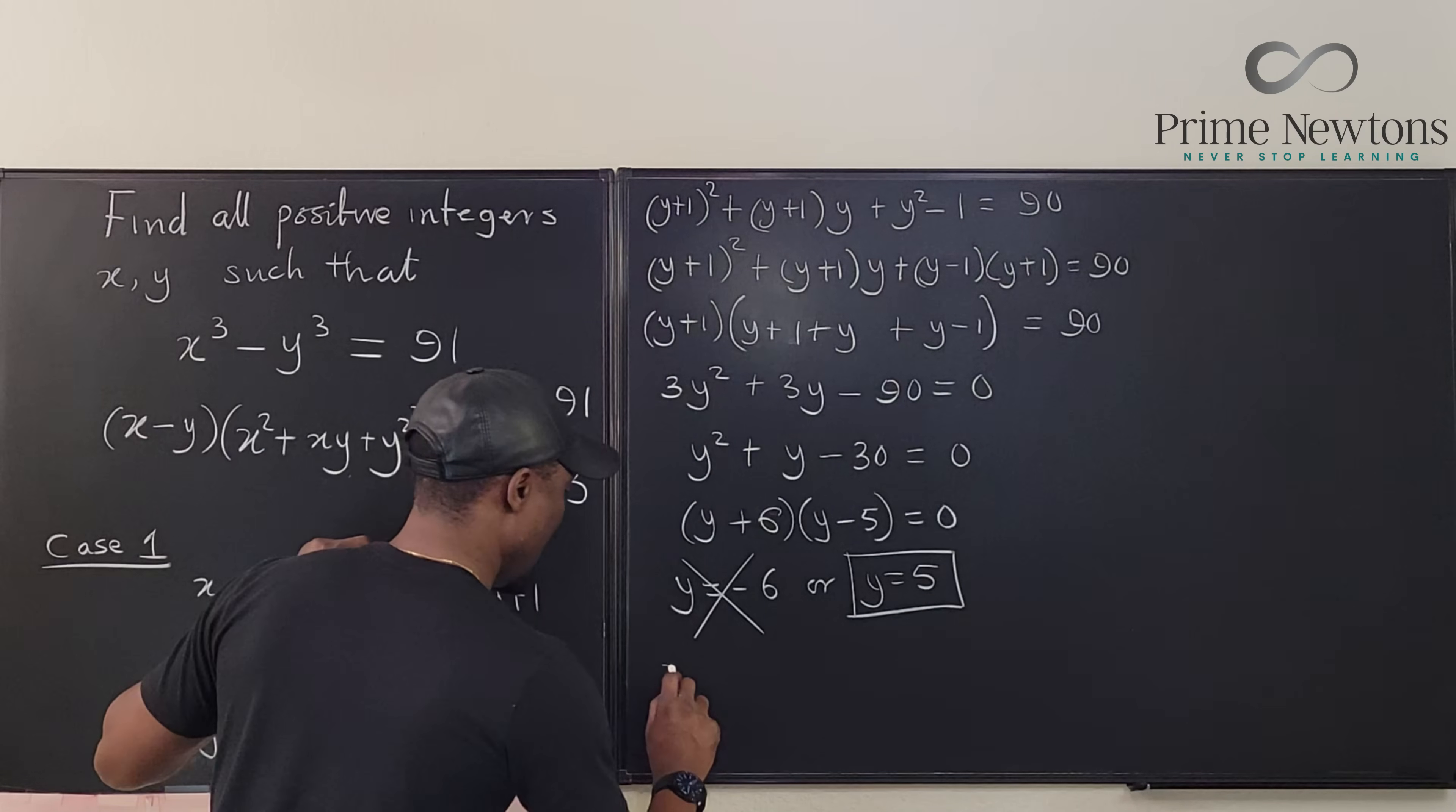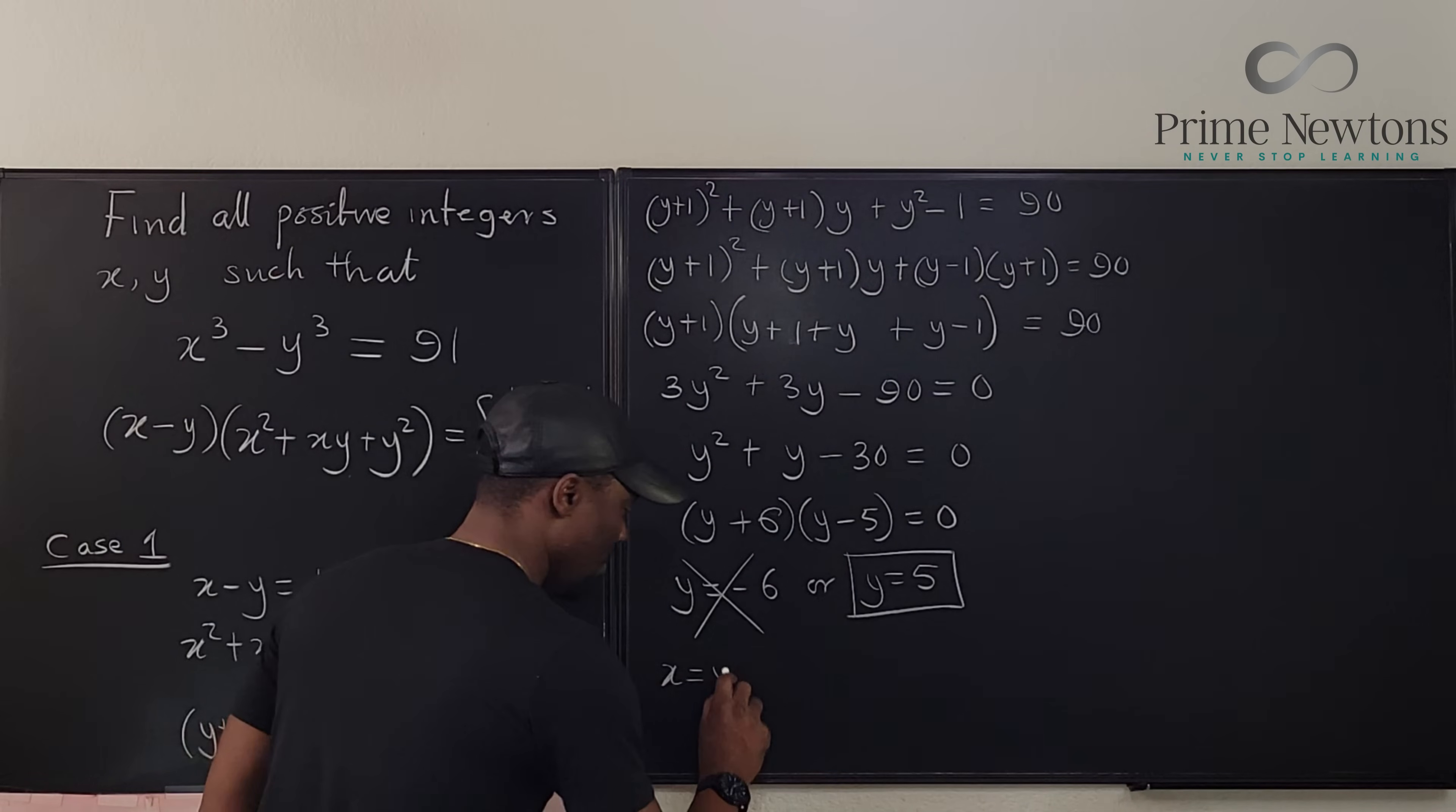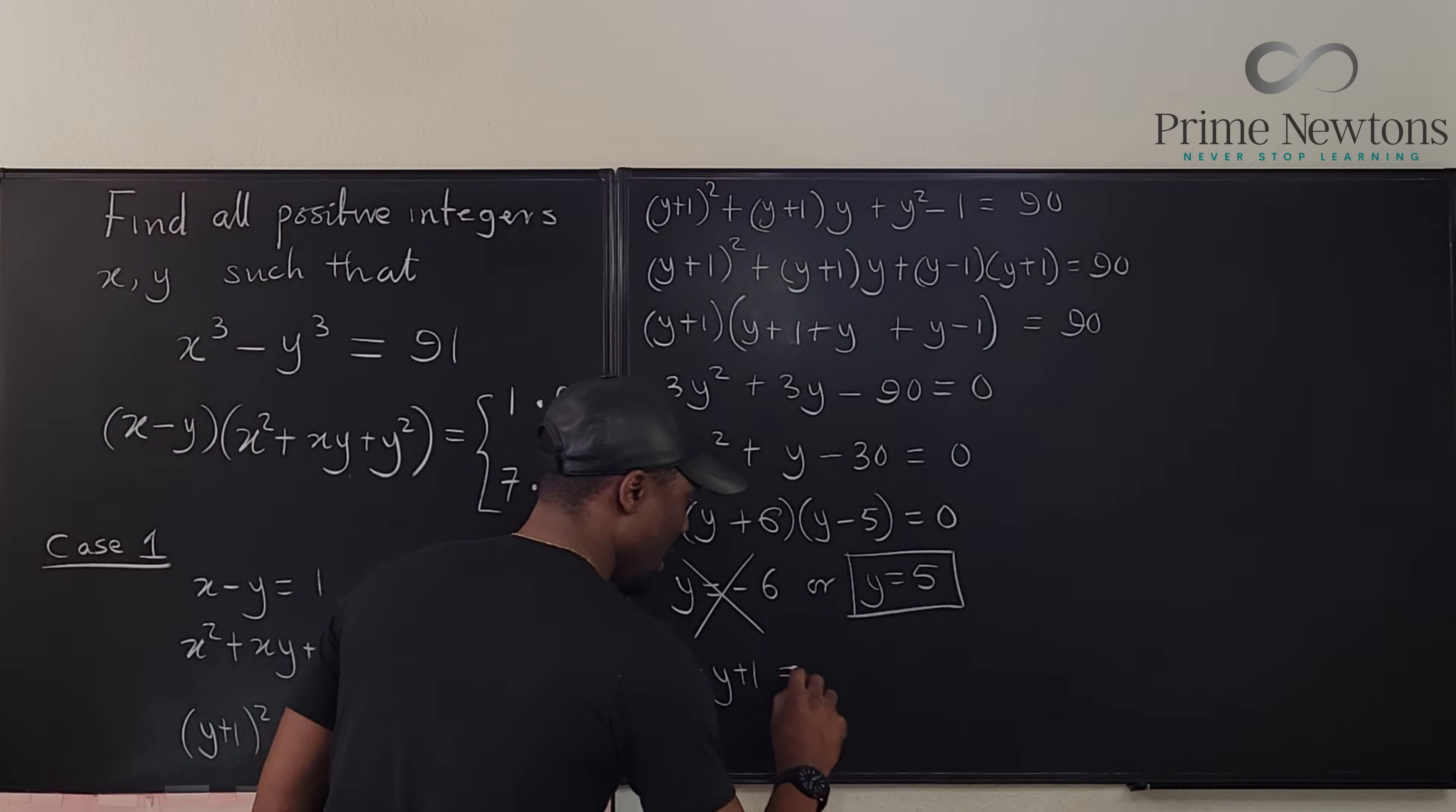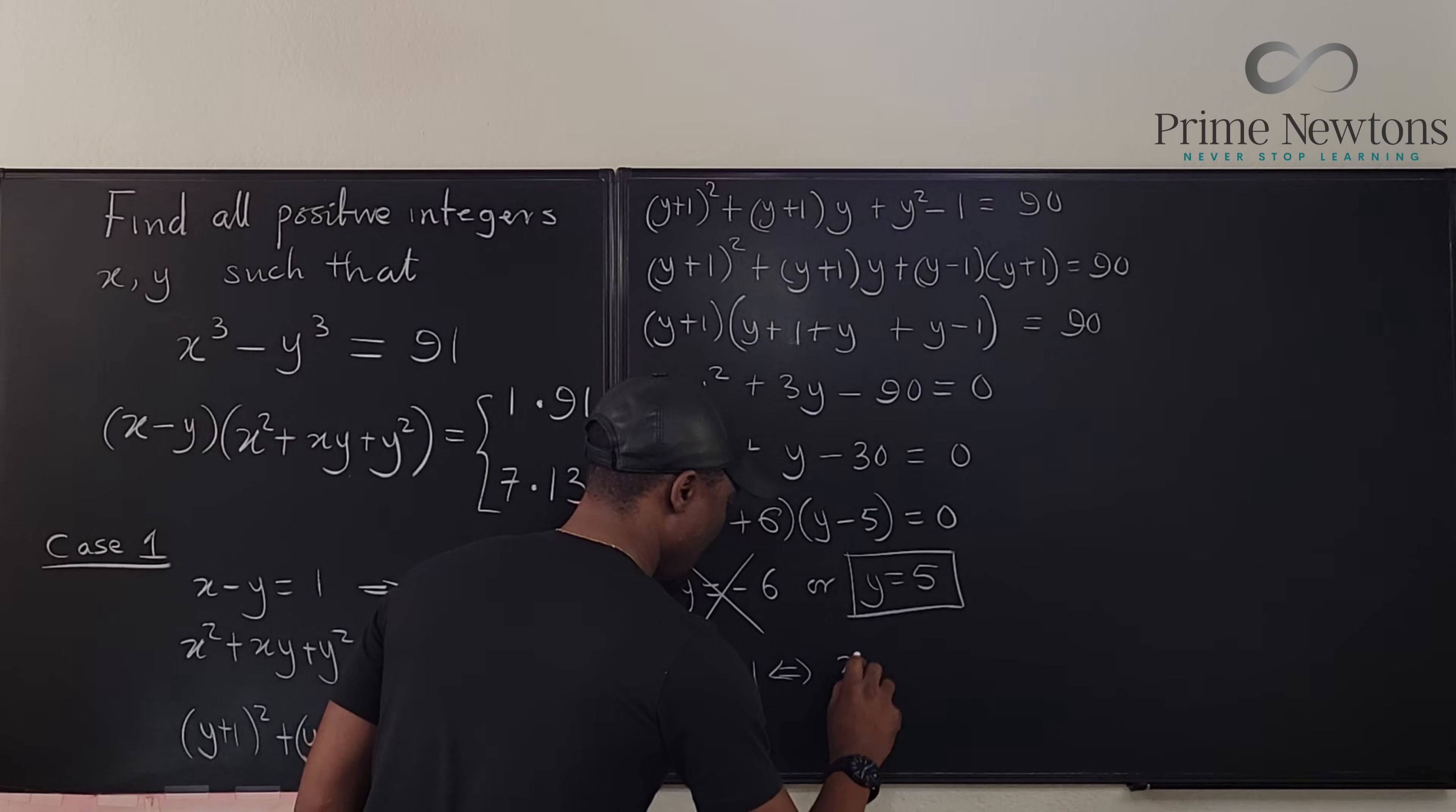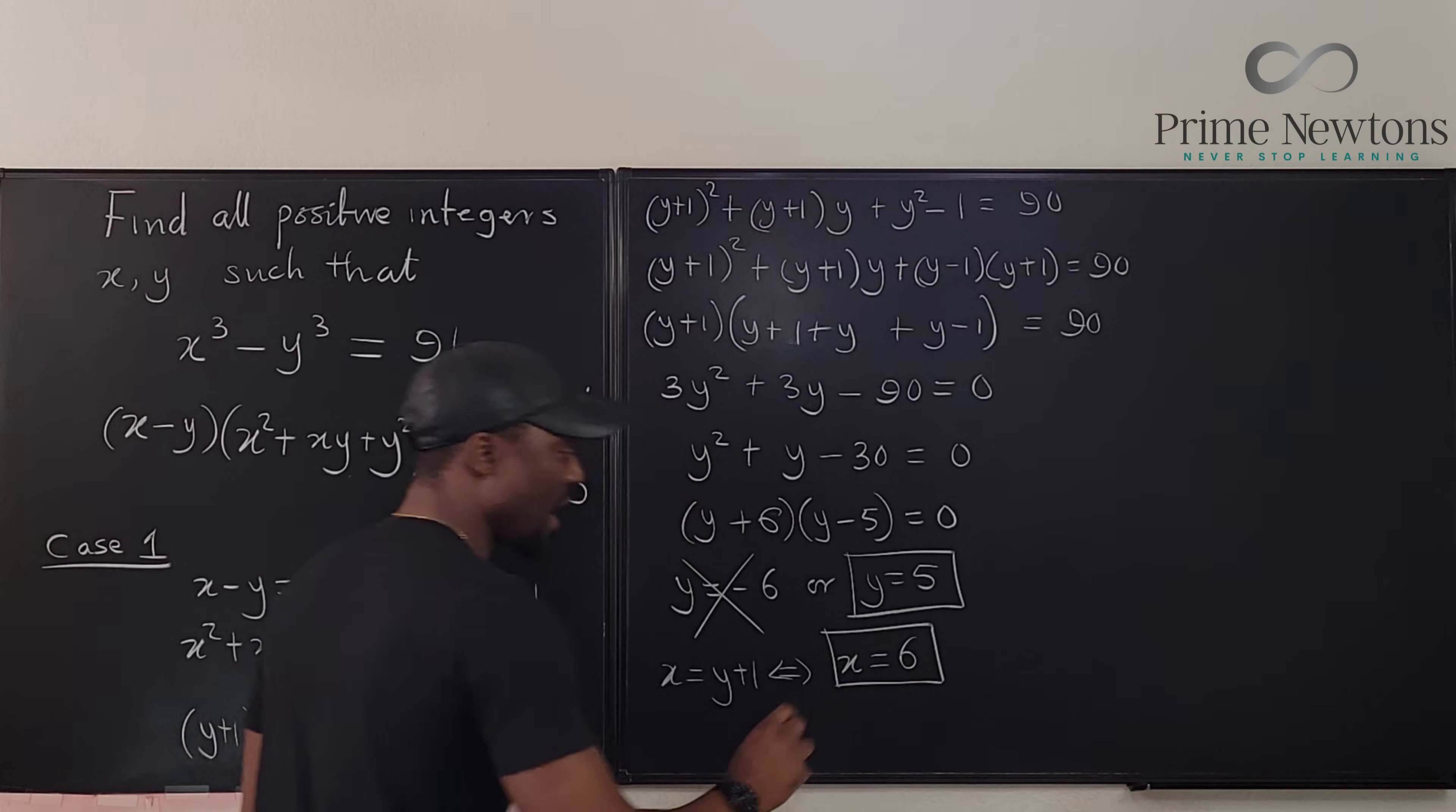That means our x will be, what is x again? We said x is y plus 1. That says that x equals 6, which is 5 plus 1. So we have x equals 6 and y equals 5.